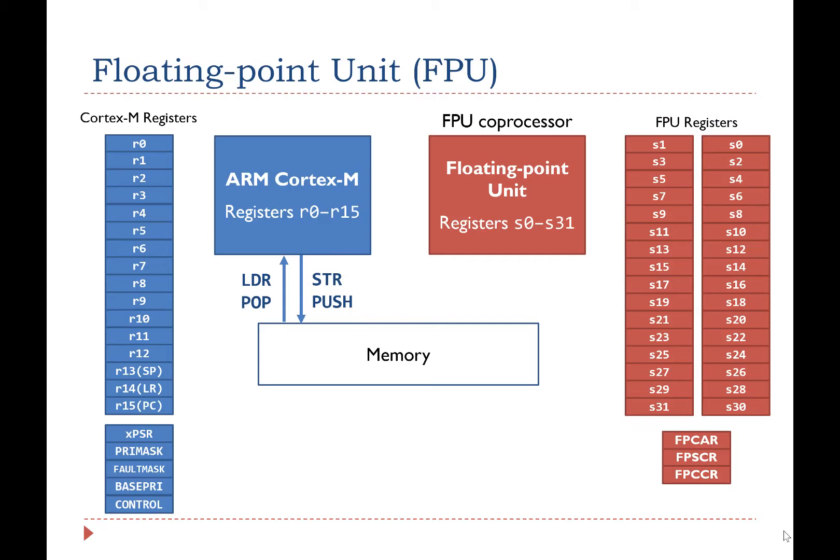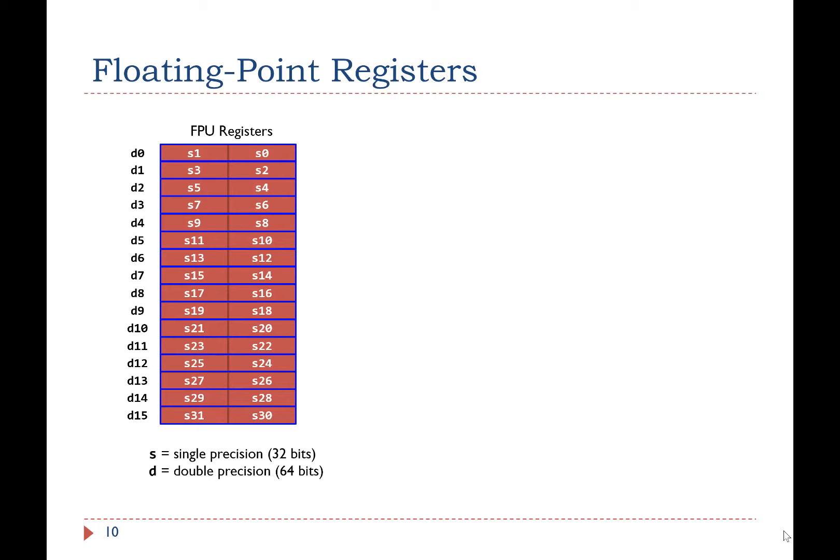FPU also has three special purpose registers as listed here. The FPU uses VLDR or VPOP to load data from the memory, and VSTORE or VPUSH to store data into memory. These single precision registers can also be accessed as a pair to form double precision registers named from D0 to D15.